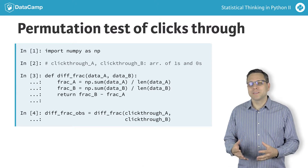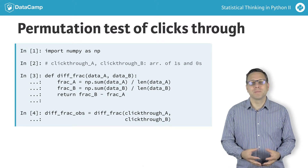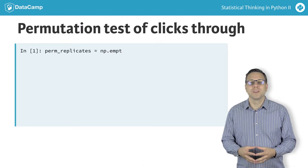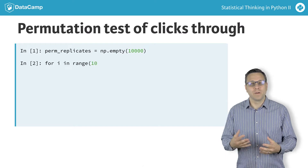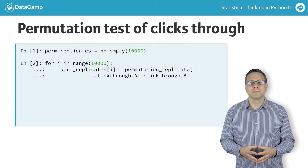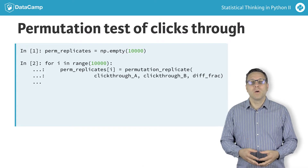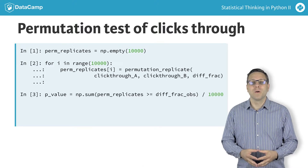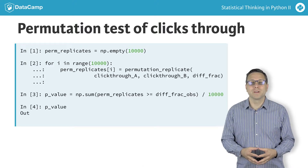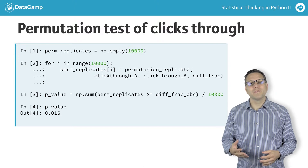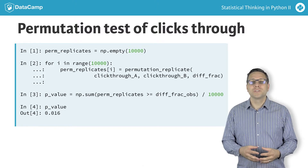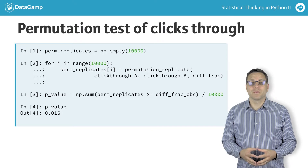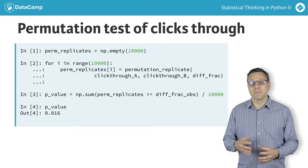Now everything is in place to generate our permutation replicates of the test statistic using the permutation replicate function you wrote in the exercises. We will generate 10,000 replicates. We compute the p-value as the number of replicates where the test statistic was at least as great as what we observed. We get a value of 0.016, which is relatively small, so we might reasonably think that the redesign is a real improvement.